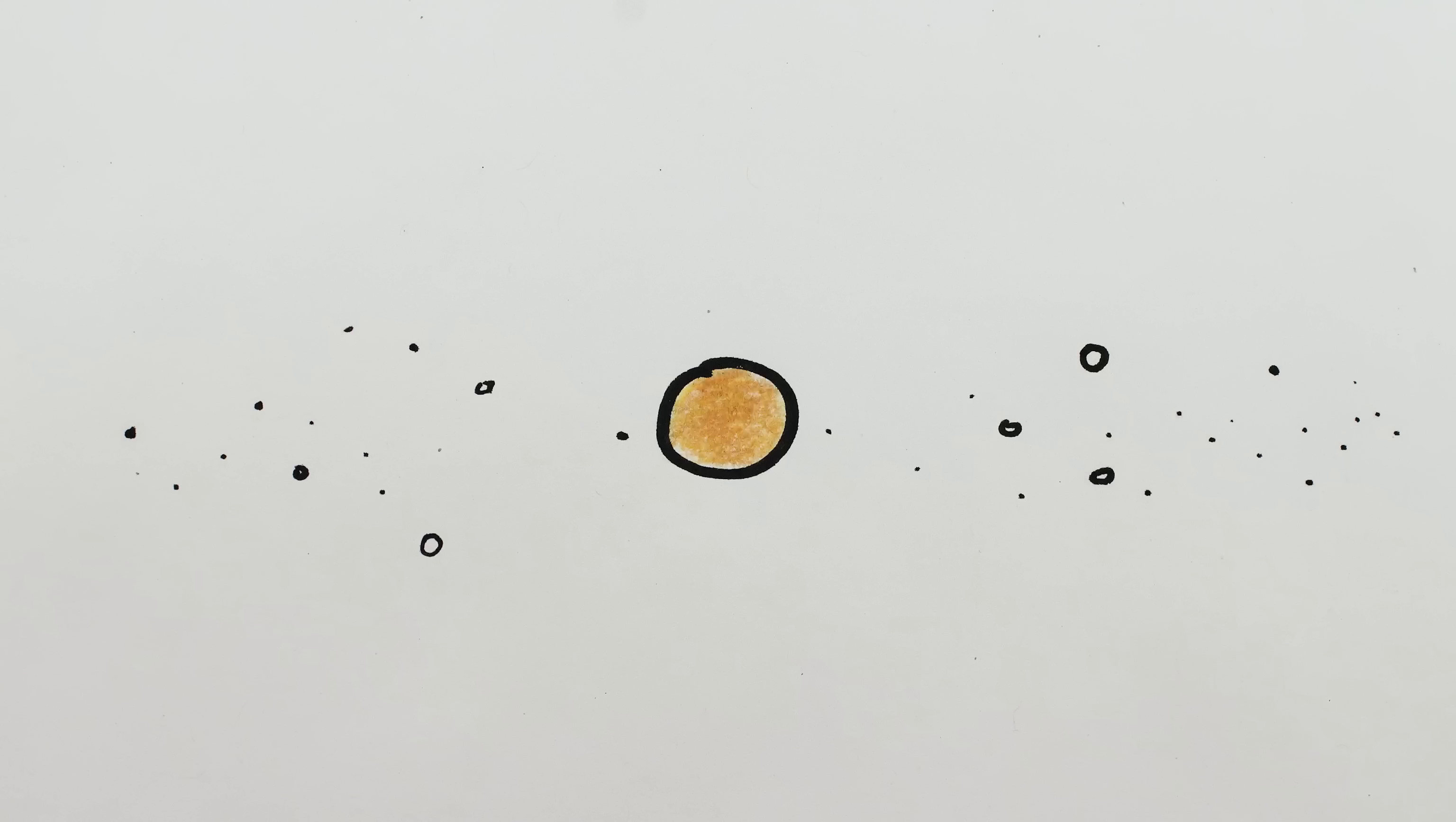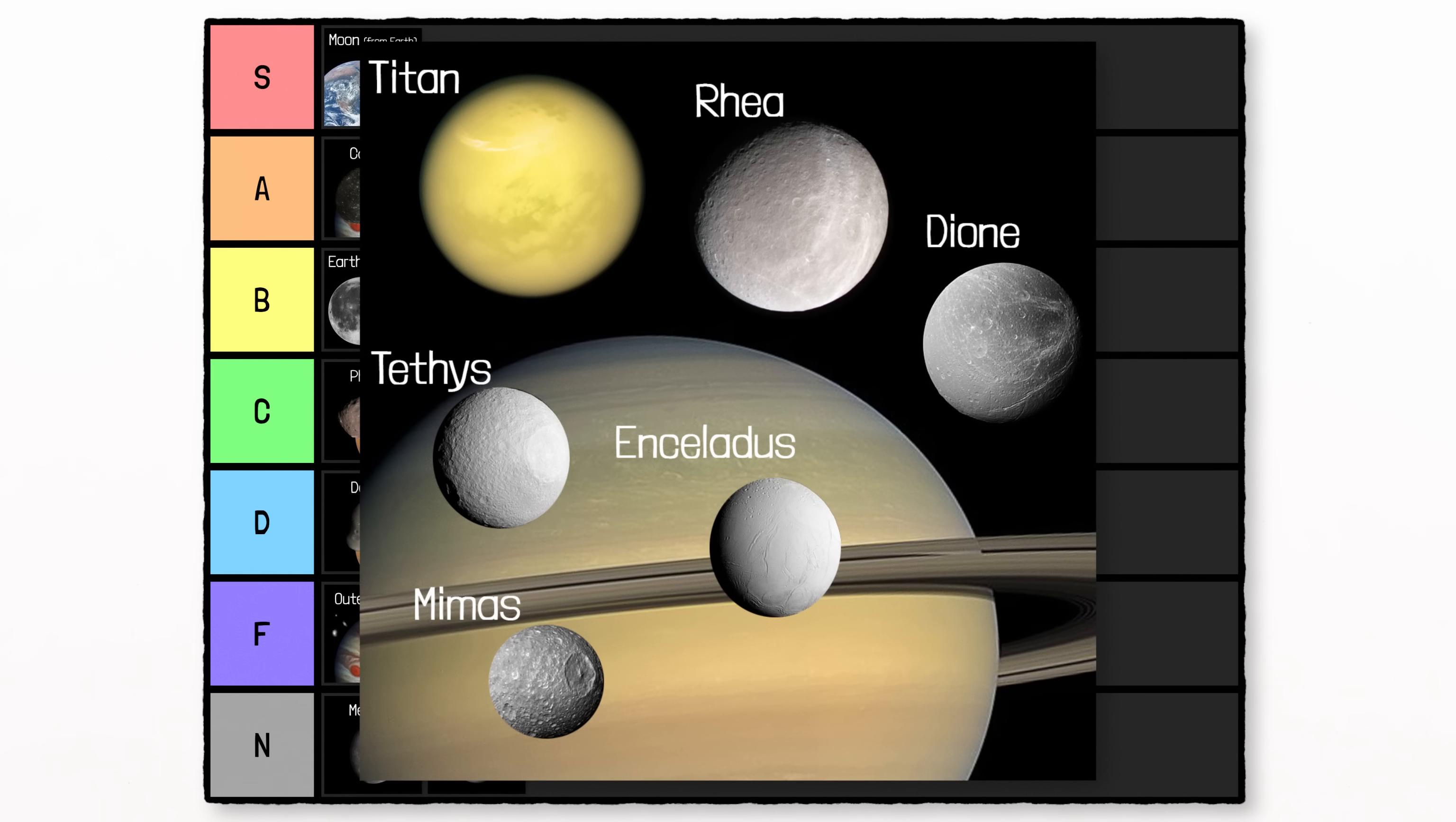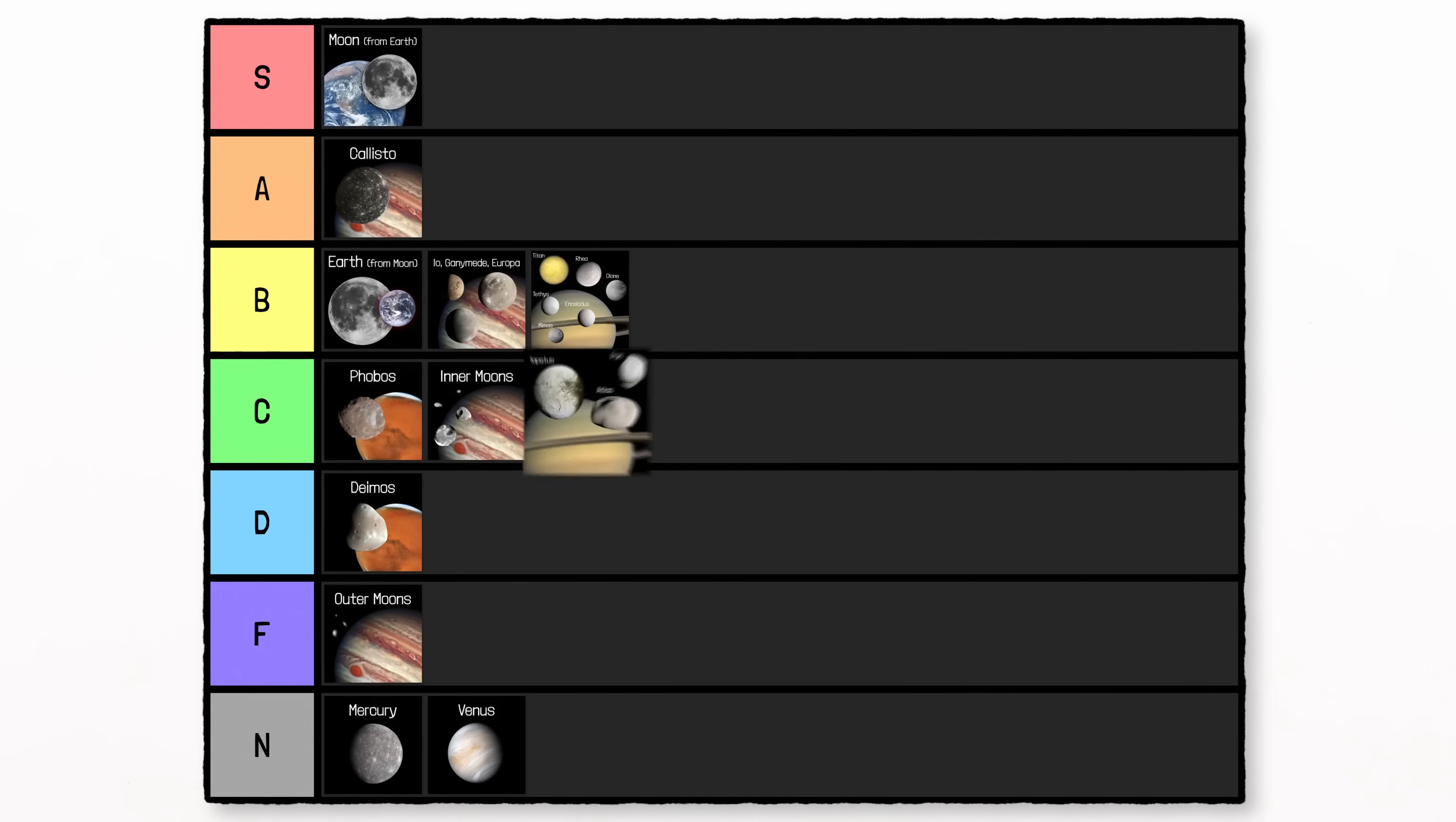Saturn has almost 150 known moons, plus rings, so it has all sorts of eclipses. About 18 of its moons are some combination of big enough and close enough to see them from Saturn with the naked eye. Six of them are too big and their eclipses probably look mostly like nighttime, so B-tier. And eight of them are too small to fully block the sun and would require solar glasses. I'm putting the largest three of these in C-tier, and the others in D-tier.